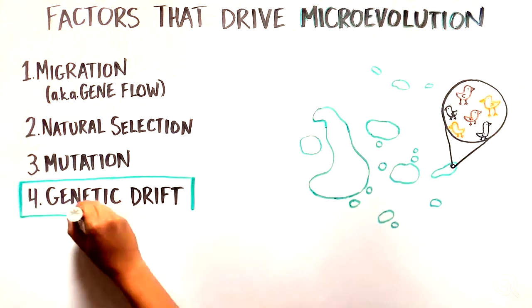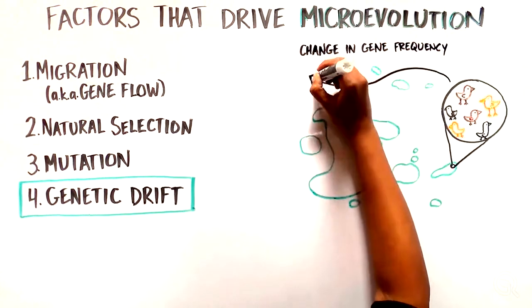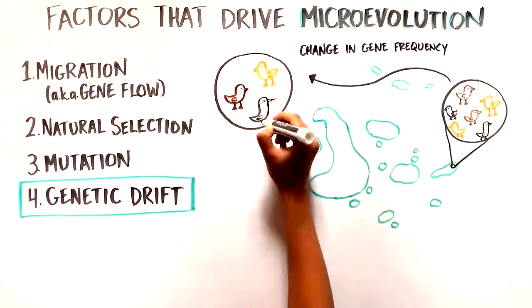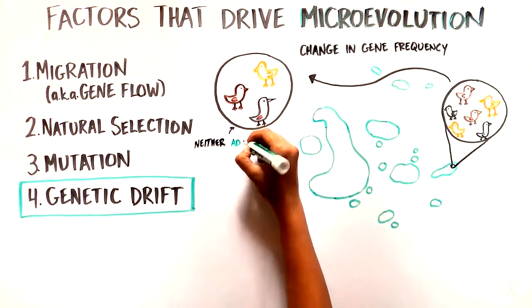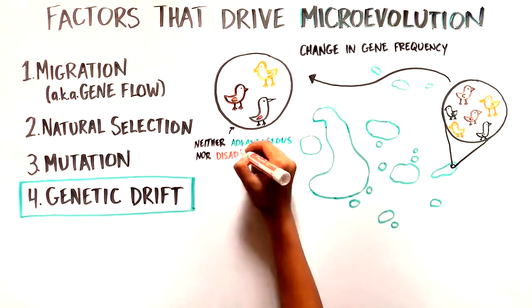And lastly, evolution can occur through random genetic drift, which refers to change in frequency of a gene variant in the population over time by chance, meaning that genetic drift does not take into account whether the gene variant is advantageous or disadvantageous.